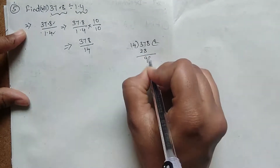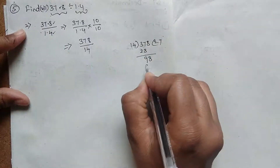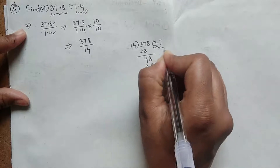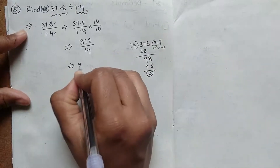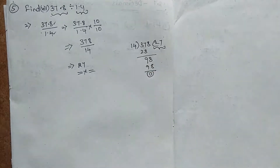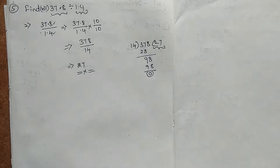9 is the remaining. Here I am doing: 14 sevens are 98, so the remainder is zero. So the answer is 27. This was the answer for this question. I hope you understand about decimals — how they are divided when only the numerator has a decimal, and when both numerator and denominator have decimals. If you liked the video, like the video, share the video, subscribe to my channel. Thank you.